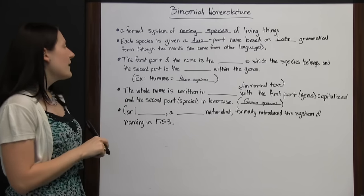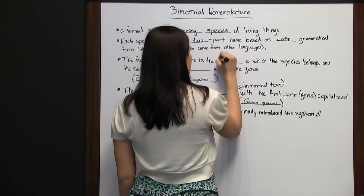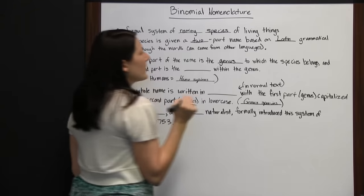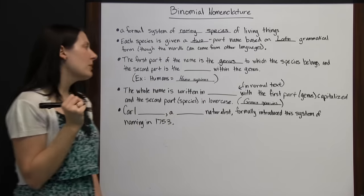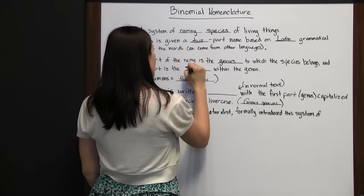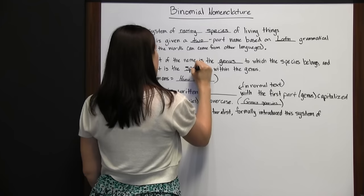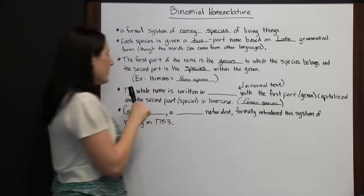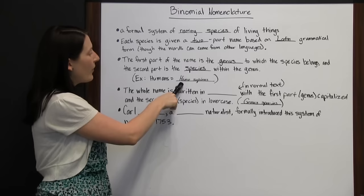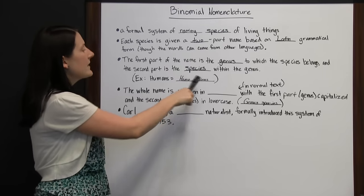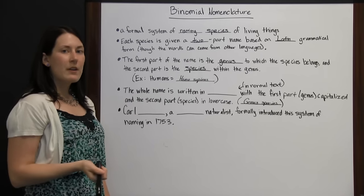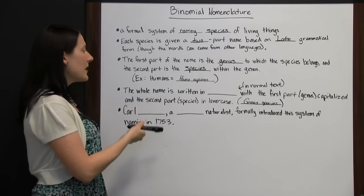The first part of the name is the genus to which the species belongs, and the second part is the species within the genus. For example, humans belong to the genus Homo and the species Sapiens, so we would be known as Homo sapiens.